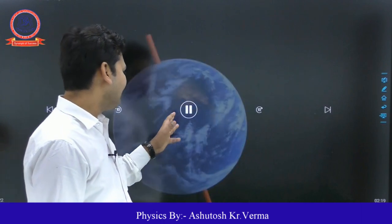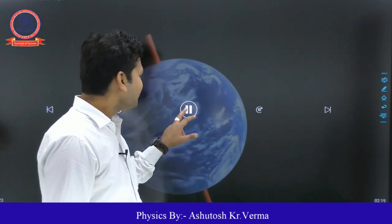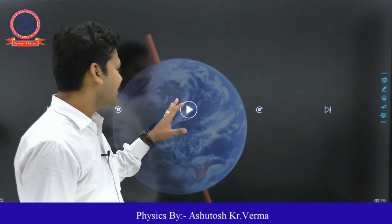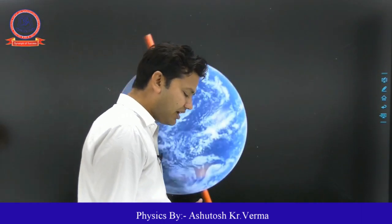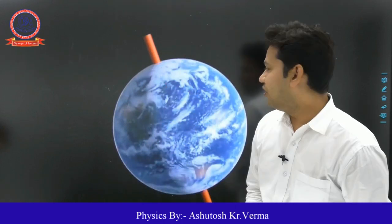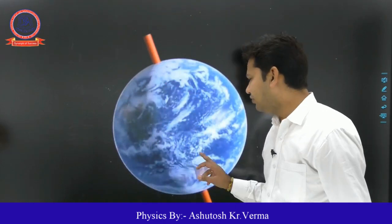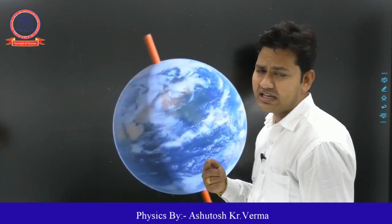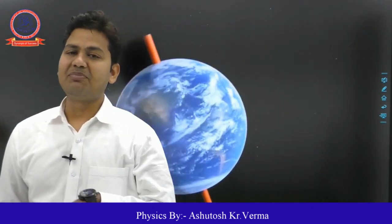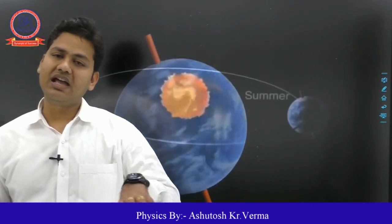If we talk about the Earth, it rotates on its axis at a certain angle, and the revolution is how it moves around the sun along an elliptical path.